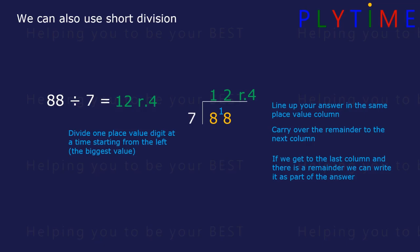So our answer is 12, remainder 4. With short division, everything is within your times tables.